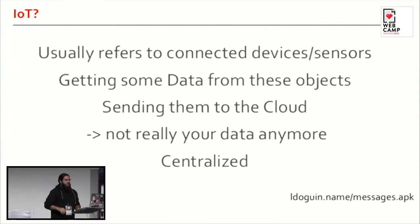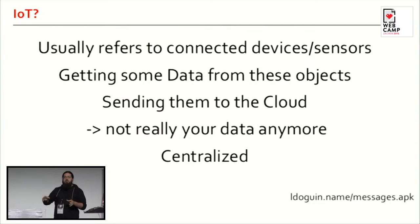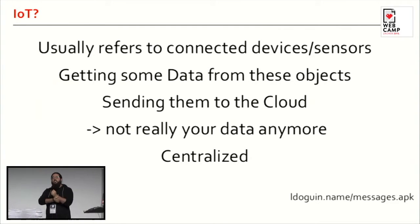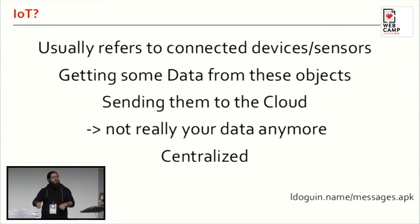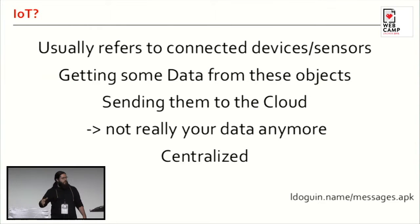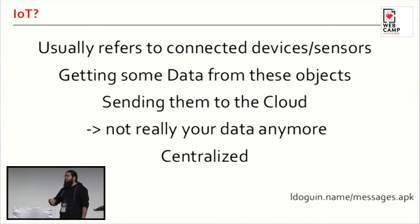That was the fun part. Now the Internet of Things is what it is — a lot of connected objects basically generate a lot of data about what you're doing. There's this quantified-self movement: you have a bracelet that gets metrics about everything you do all day. It sends data back to a central server, and if you want to get the data back, you can't — you have to use their API. Basically, it's not your data anymore, which from a privacy perspective is not so good.